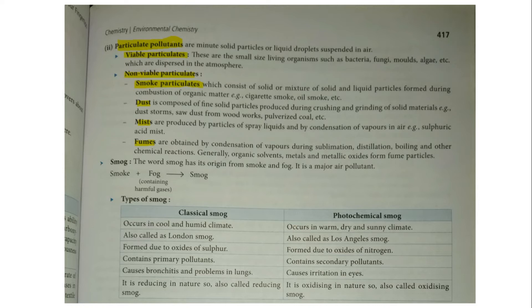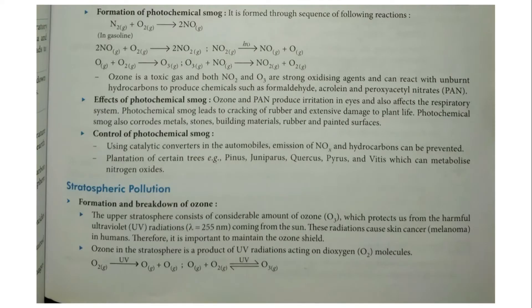Photochemical smog occurs in warm, dry and sunny climates. It involves a light-induced reaction. Photochemical smog involves nitrous oxide as a key pollutant.